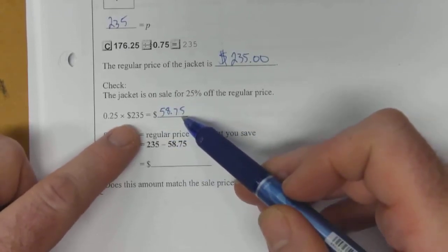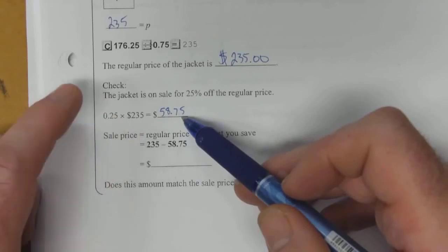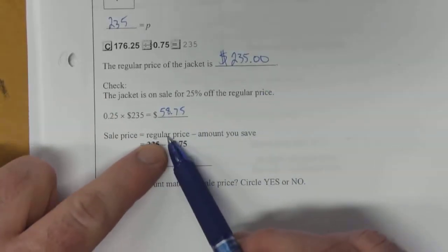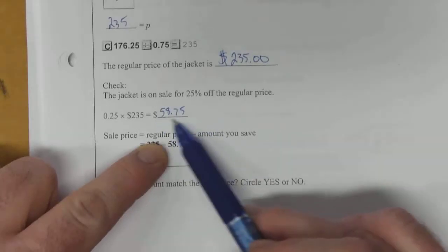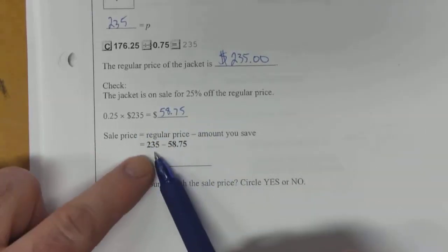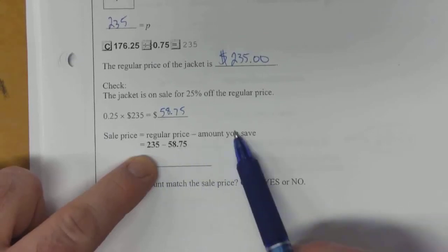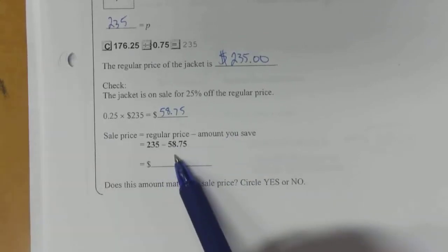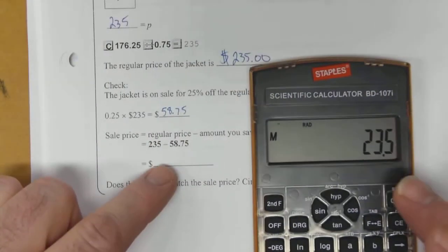So to check to see if the sale price works, we're going to have to take the regular price, subtract the amount you save, which is this, and see if it works out to be the sale price. So $235 minus the amount you save, $58.75. And when you do that...